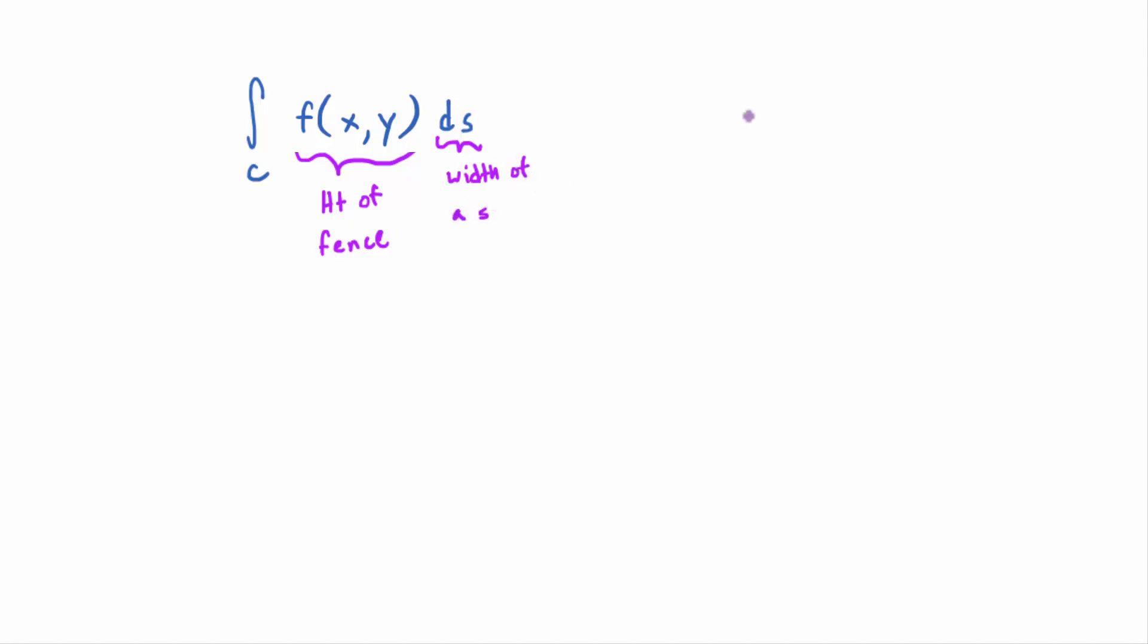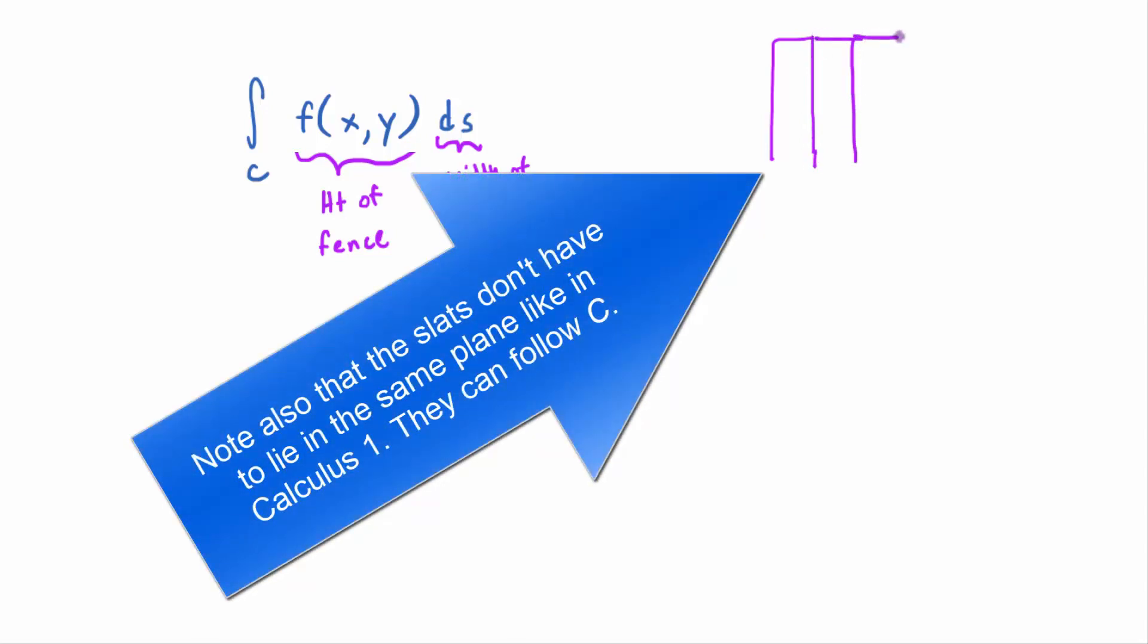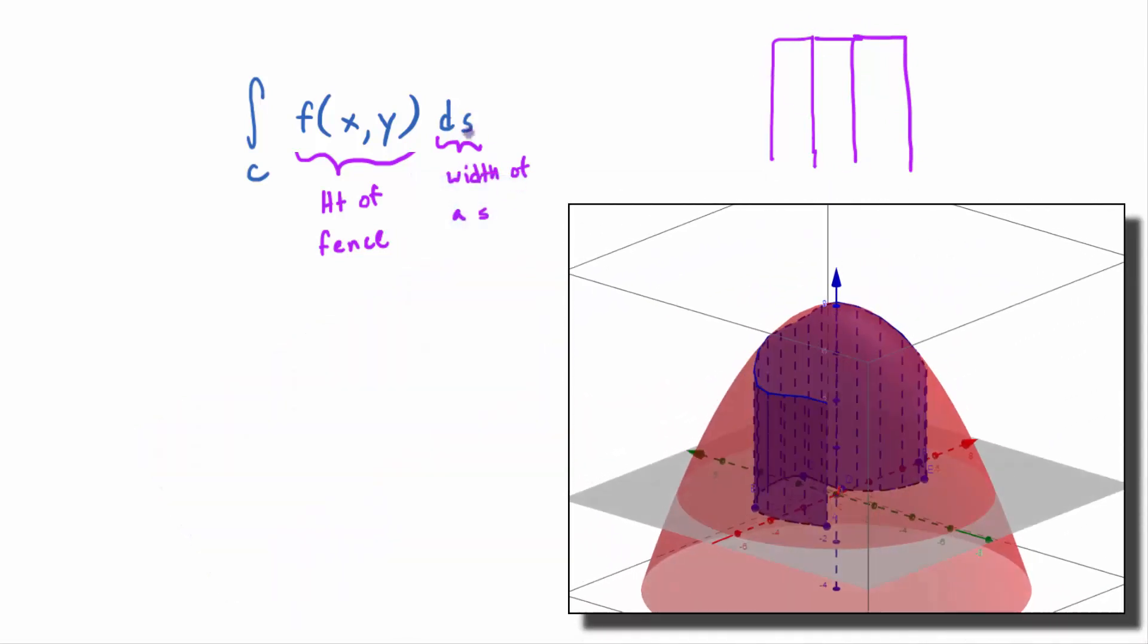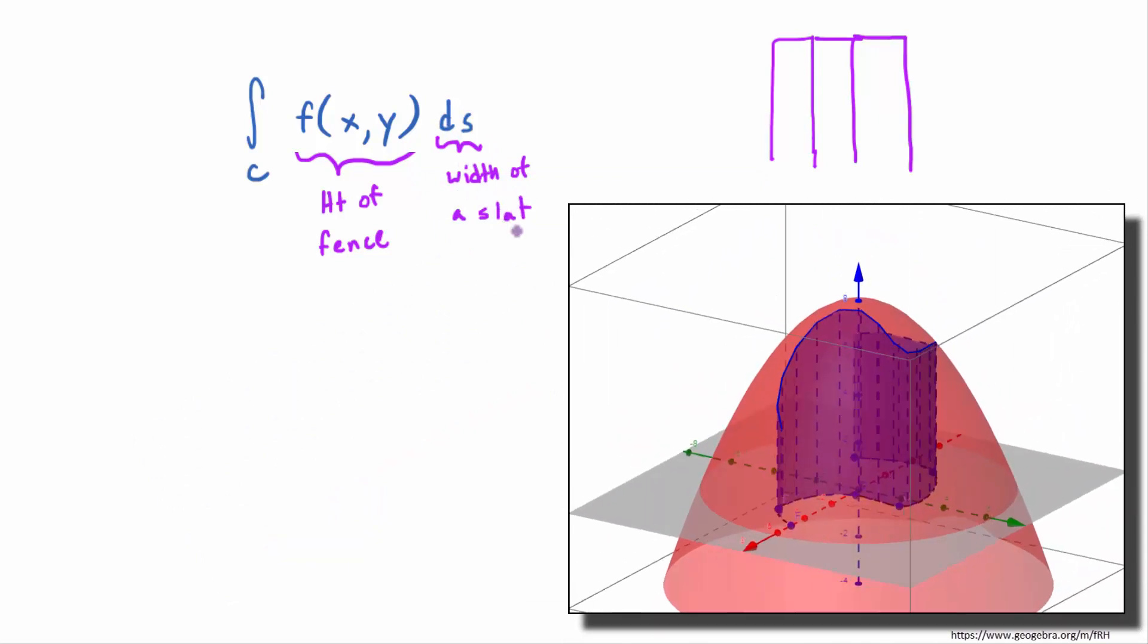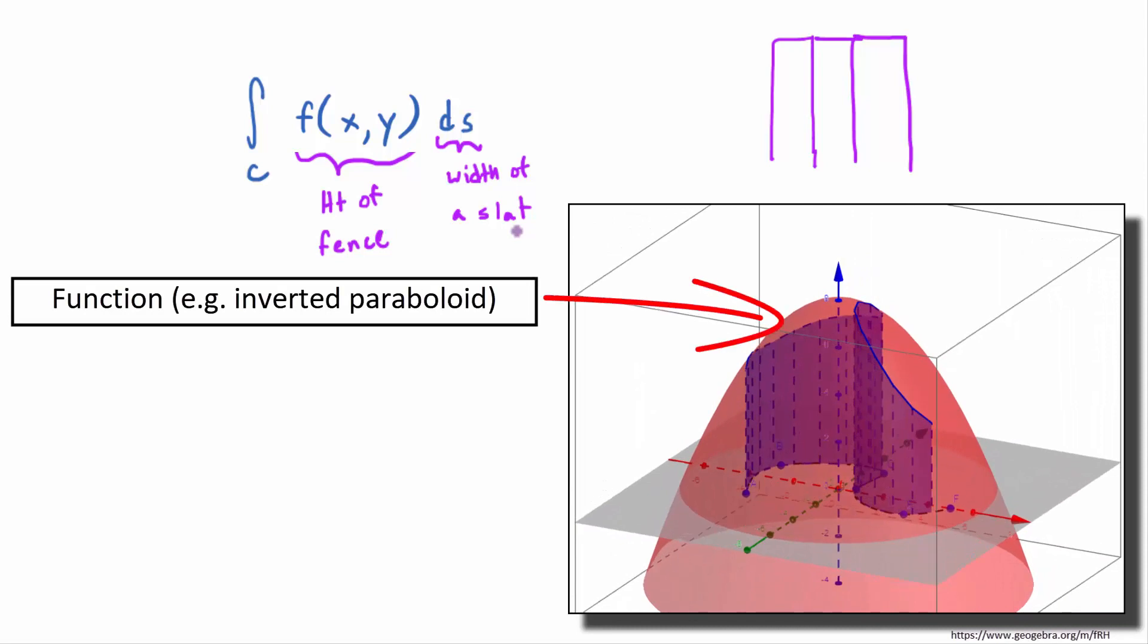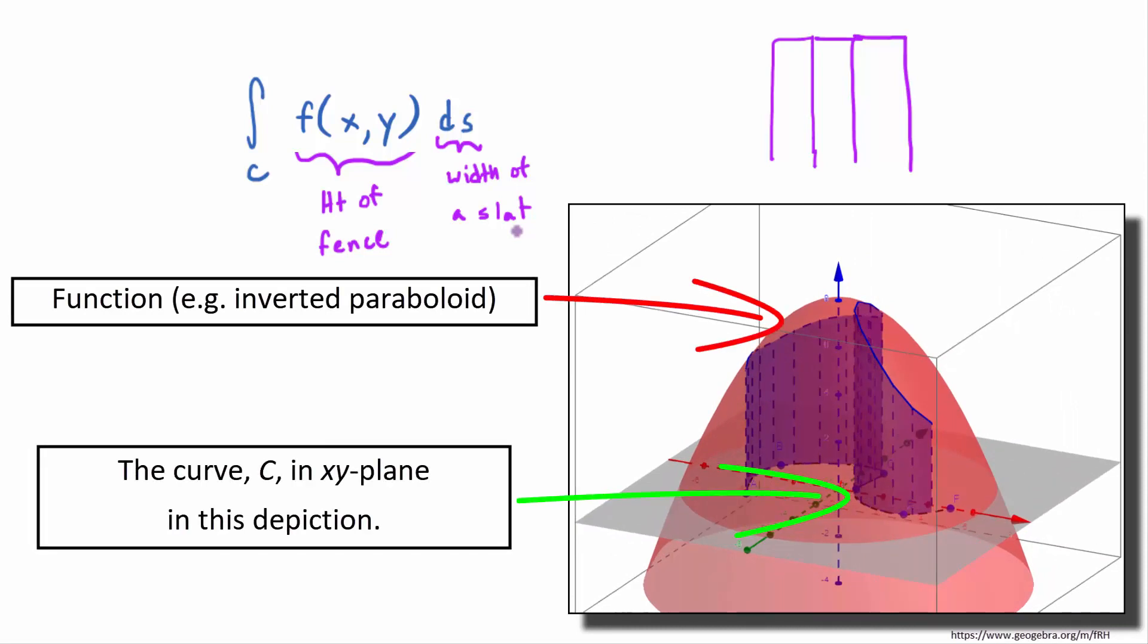So this would be the width of a slat. The slats would be the panels that you put up to create the fence, but they don't have to be equal height or even equal width. But think of ds as the width of a slat. It's really an arc length, infinitesimally small piece of arc length. And then when you multiply f times ds, it's an area element.